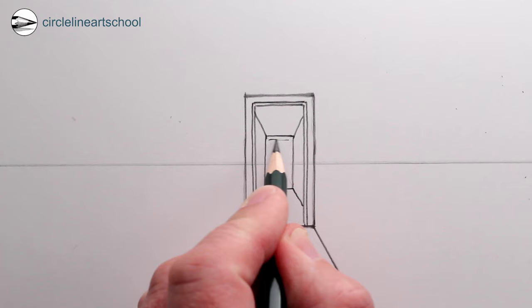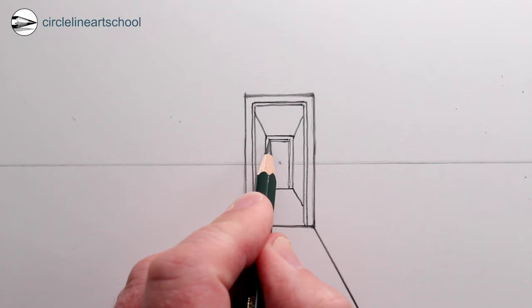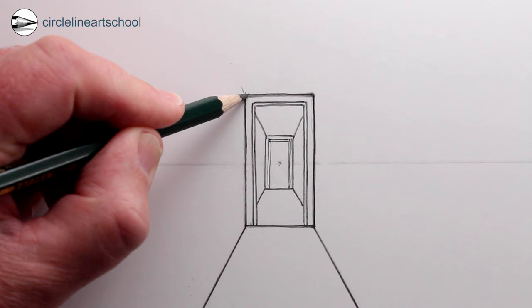We could just darken some lines too. Next for the doorframe in the distance we can add the same sort of doorframe detailing around it, but it will be smaller and narrower, and it's probably a good idea to have the pencil sharper so the lines are thinner at a distance.